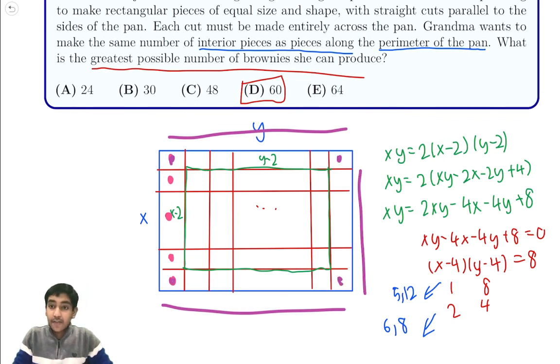In a 5 by 12 grid, we would have 30 pieces on the interior as well, because it would be 3 times 10, which is 30. Checking our work, we see 60 has to be the correct answer. Thank you all for watching this video. I hope to see you next time. Bye.